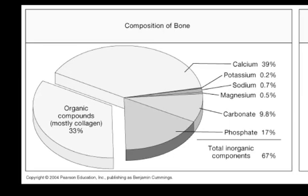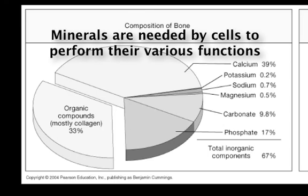Minerals make up about 77% of bone mass. Calcium and phosphate make up the bulk of these minerals. The mineral matrix of bone provides the hardness of bone, but these minerals are also needed by the cells to perform their various functions.